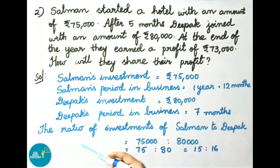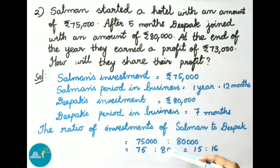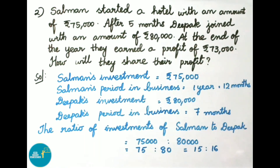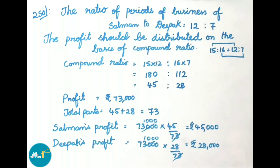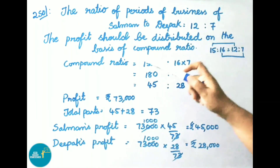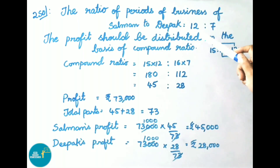The ratio of investments of Salman to Deepak equals 75,000 to 80,000. Dividing both terms by 1,000 we get 75 to 80, and again dividing by 5 the ratio is 15 is to 16. The ratio of periods of business of Salman to Deepak is 12 months to 7 months, that is 12 is to 7.